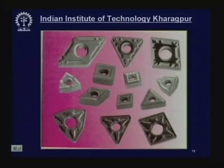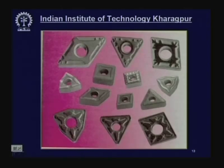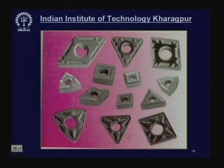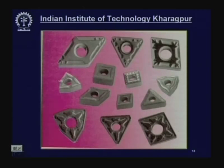Some typical carbide tool inserts are shown — they can be square, triangular, hollow, or solid, with different shapes. The patterns on inserts are for giving additional edge strength, chip-breaking effect, compound rake — negative combined with positive rake — for these specific purposes.